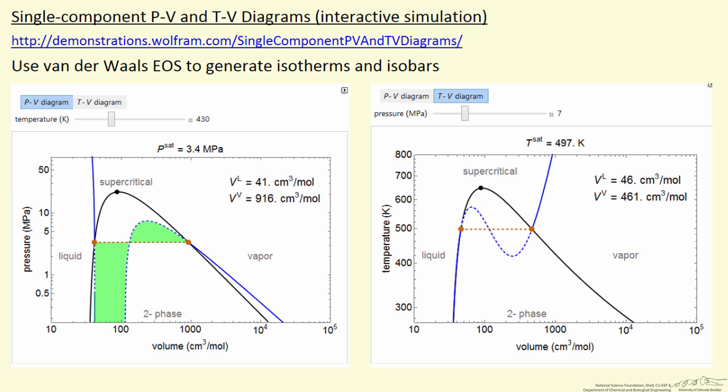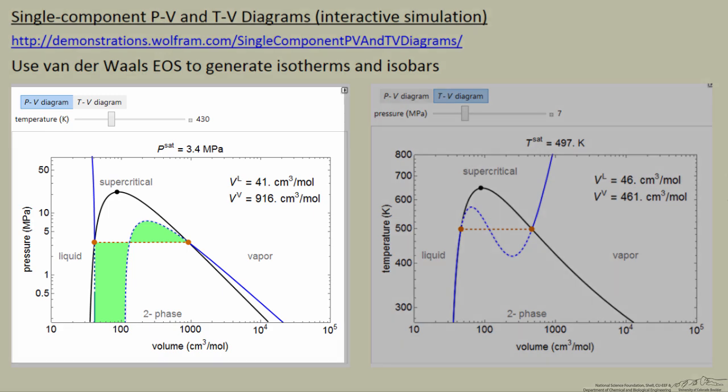I'm going to describe an interactive simulation that is available on the Wolfram Demonstration Project site, and it uses the van der Waals equation of state to generate isotherms on the PV diagram and to generate isobars on the TV diagram.